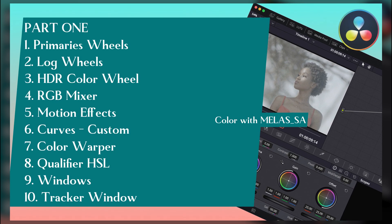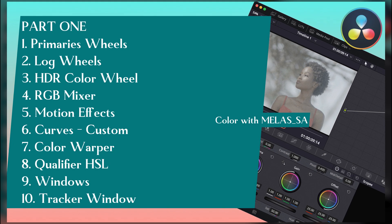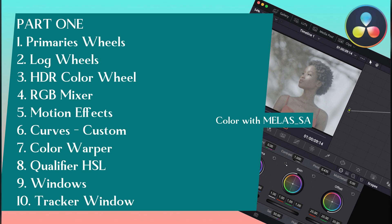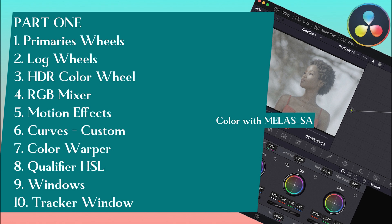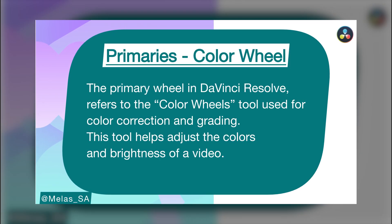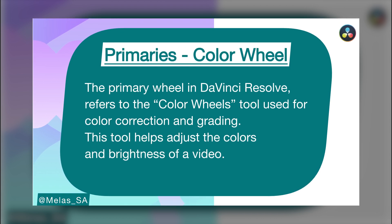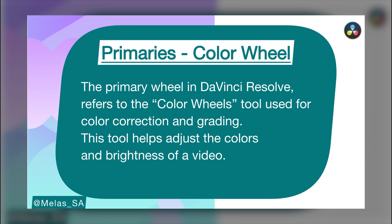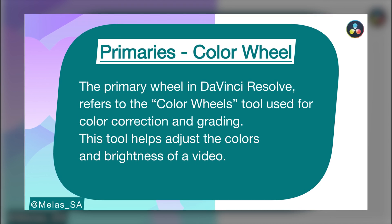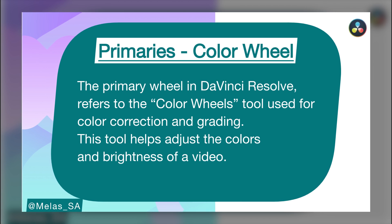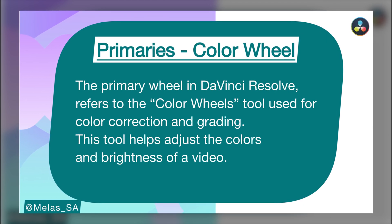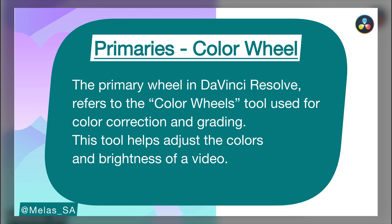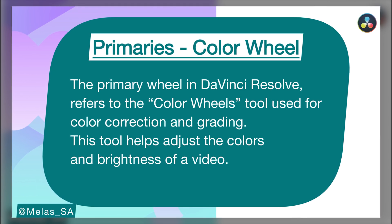The first thing we are going to talk about is the Primaries. I'll explain what it is, how it's used, and how you can use it to achieve image balancing and corrections when it comes to color grading. The Primary Wheel in DaVinci Resolve refers to the color wheel — this is where you can manipulate your pictures.